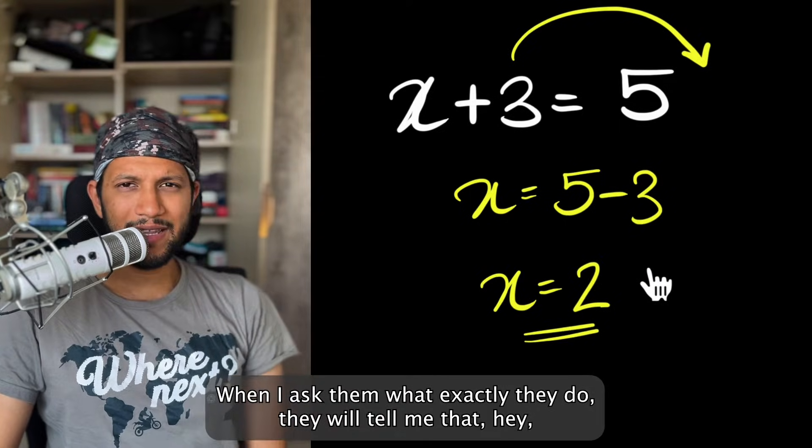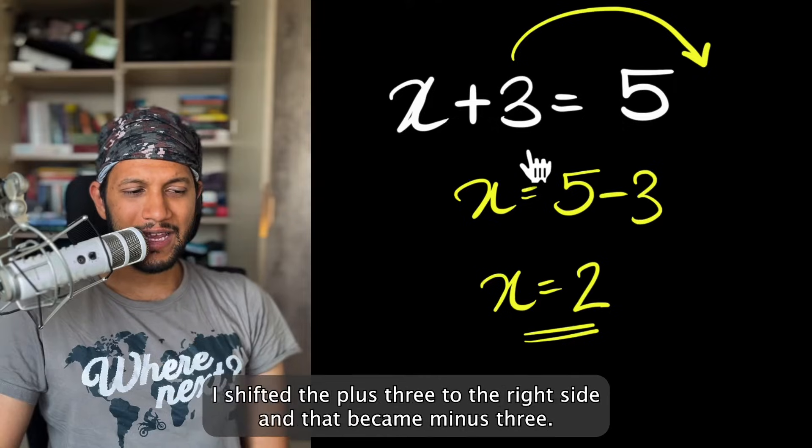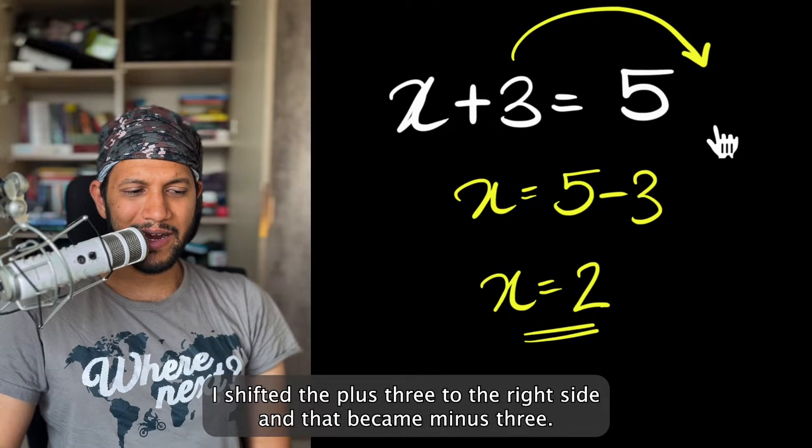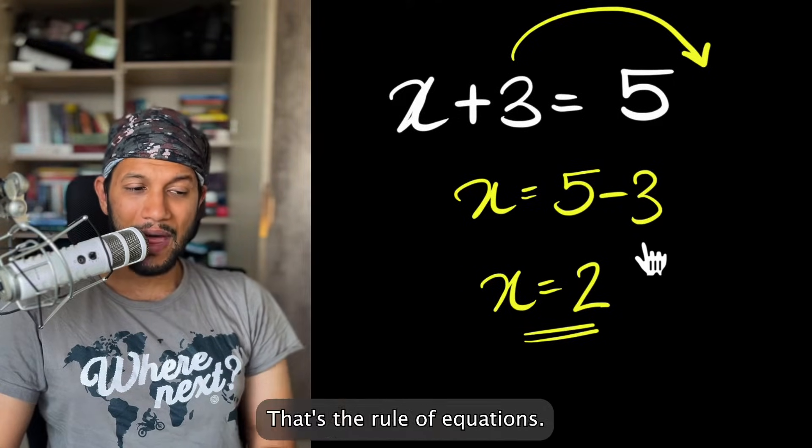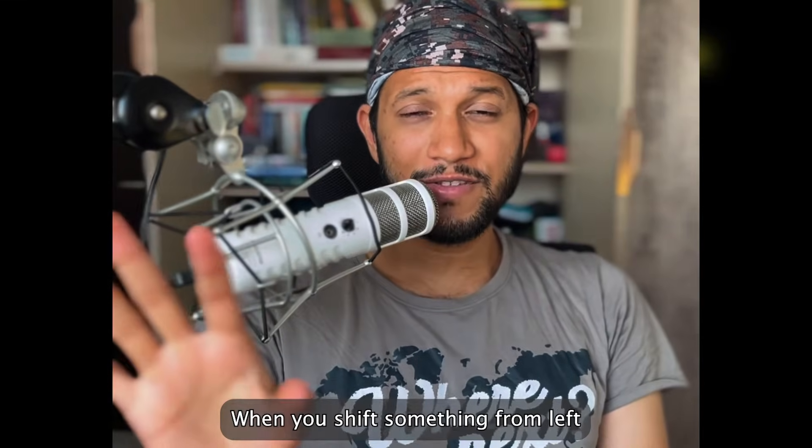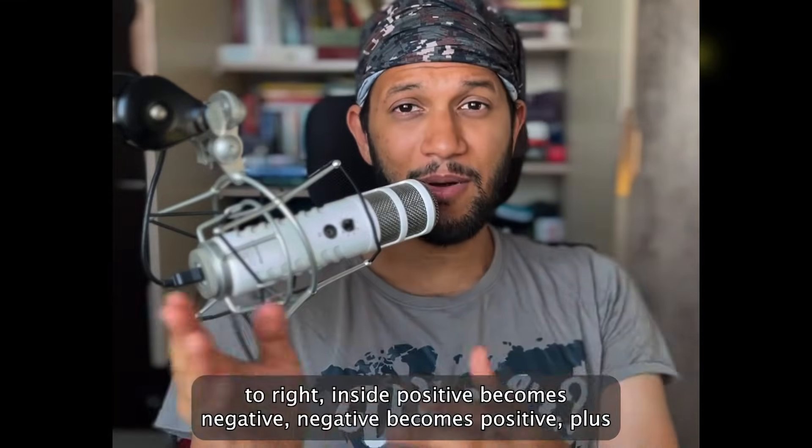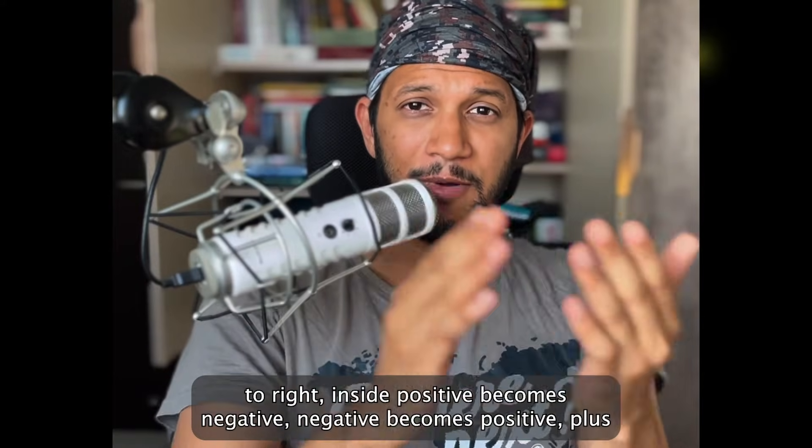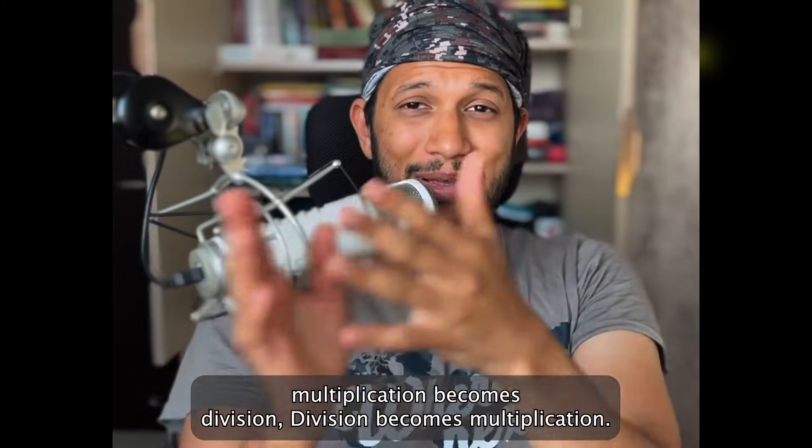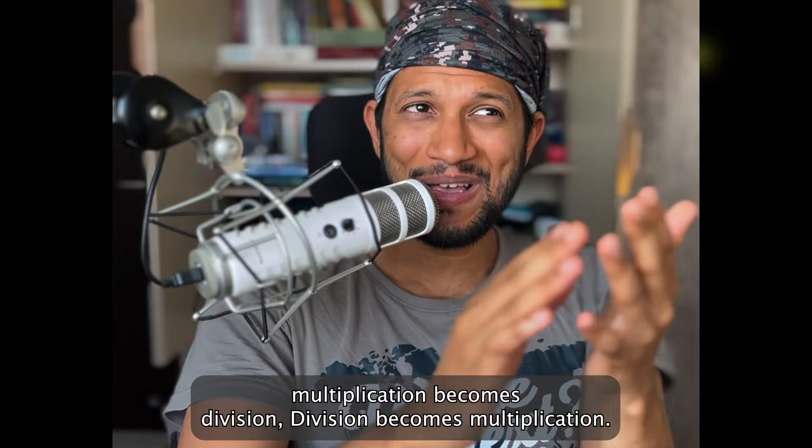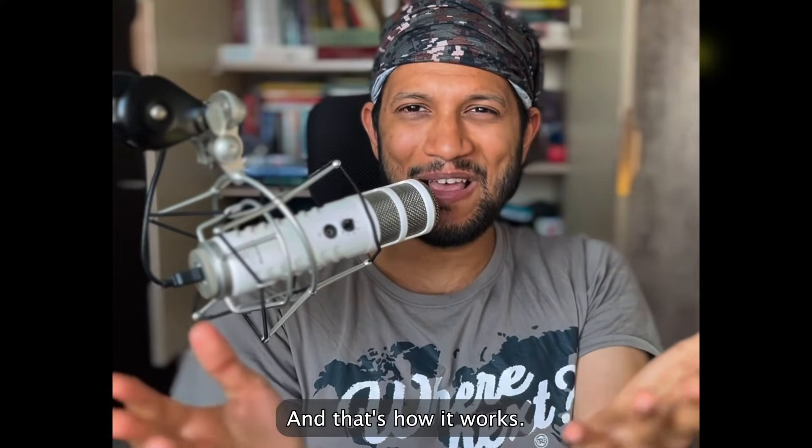When I ask them what exactly did they do? They will tell me that, hey, I shifted the plus three to the right side and that became minus three. That's the rule of equations. When you shift something from left-hand side to right-hand side, positive becomes negative, negative becomes positive, multiplication becomes division, division becomes multiplication and that's how it works.